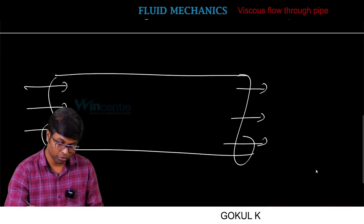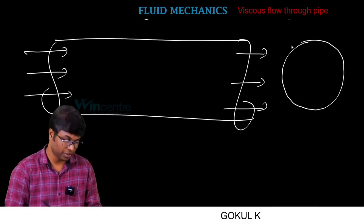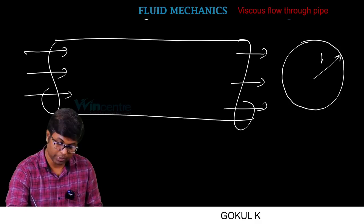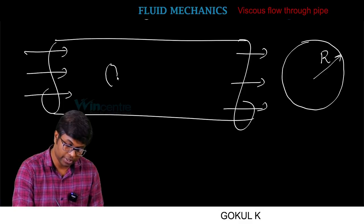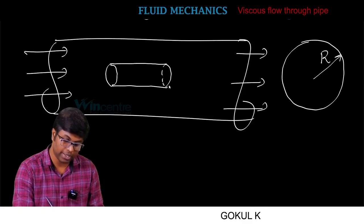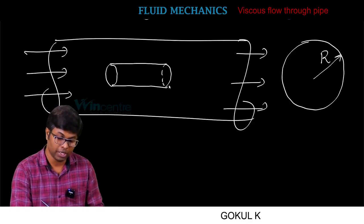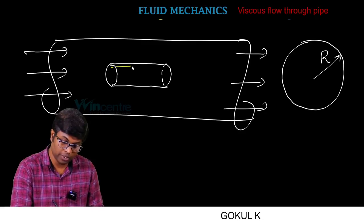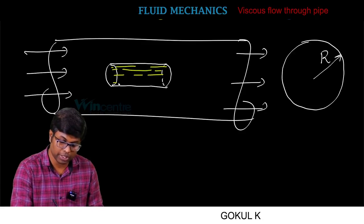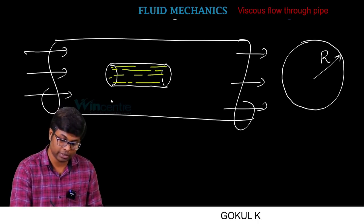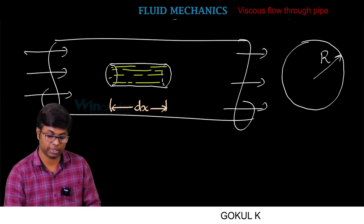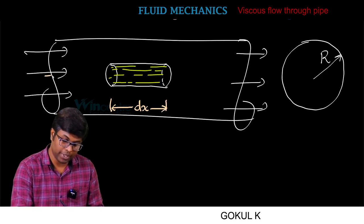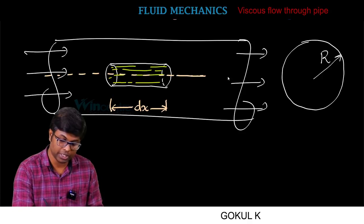Suppose the pipe has a circular cross-section with radius capital R. In this flow, I consider a cylindrical fluid element concentric with the pipe. This is an imaginary cylinder. This cylindrical portion has a length, let it be dx — an elemental fluid length.